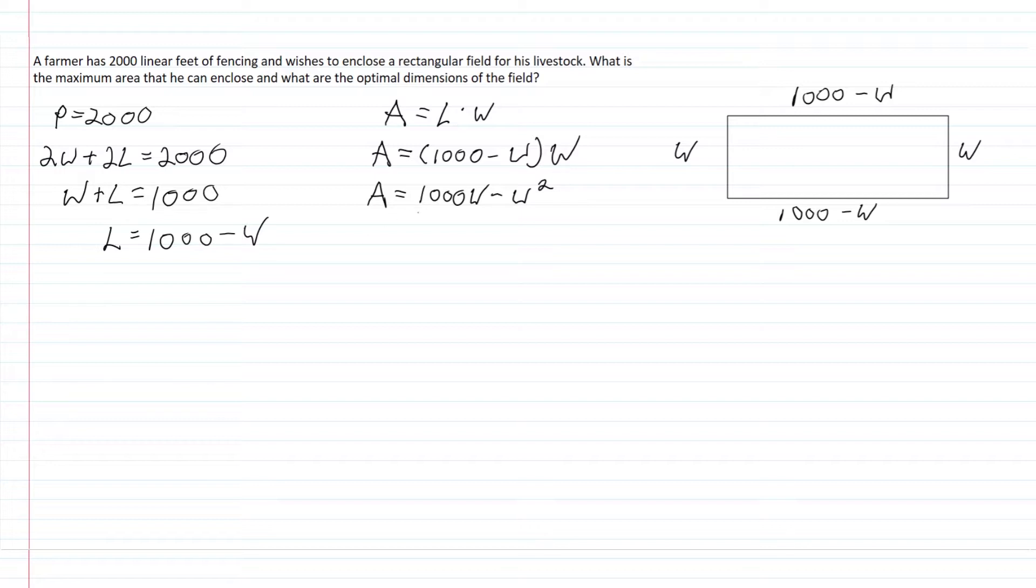We need to take the derivative of this. The derivative of 1,000W is just 1,000, and the derivative of W squared is 2W. Our maximum area is going to be found when we set this derivative equal to 0.